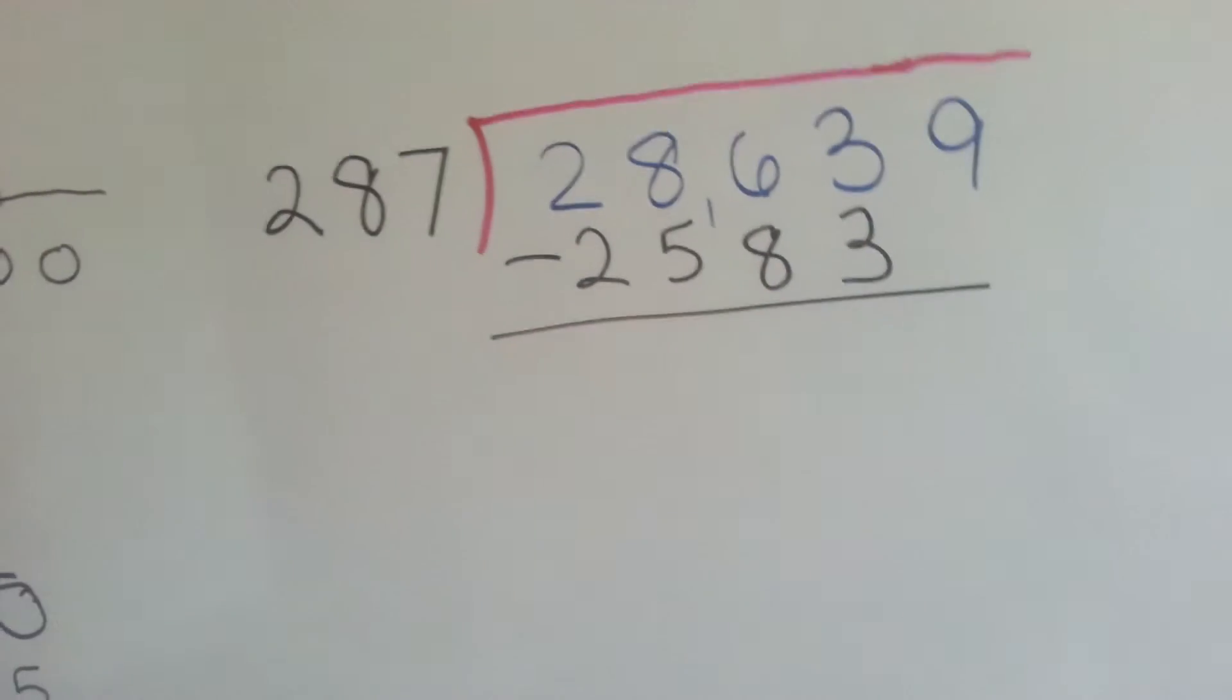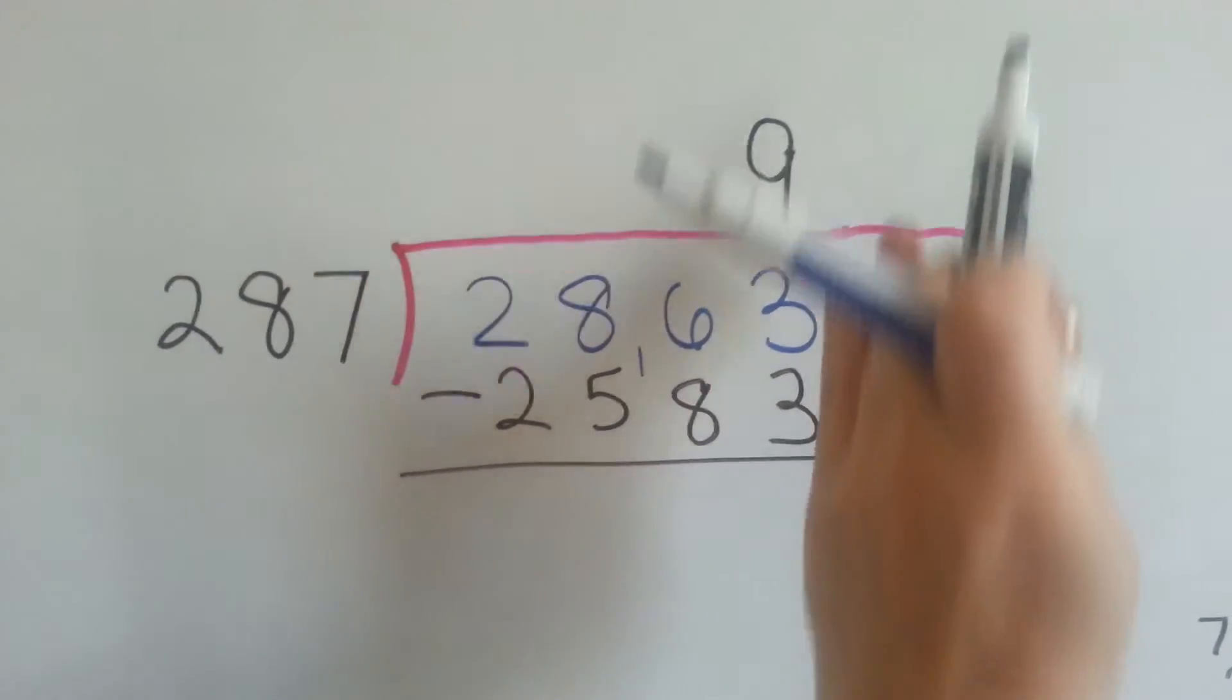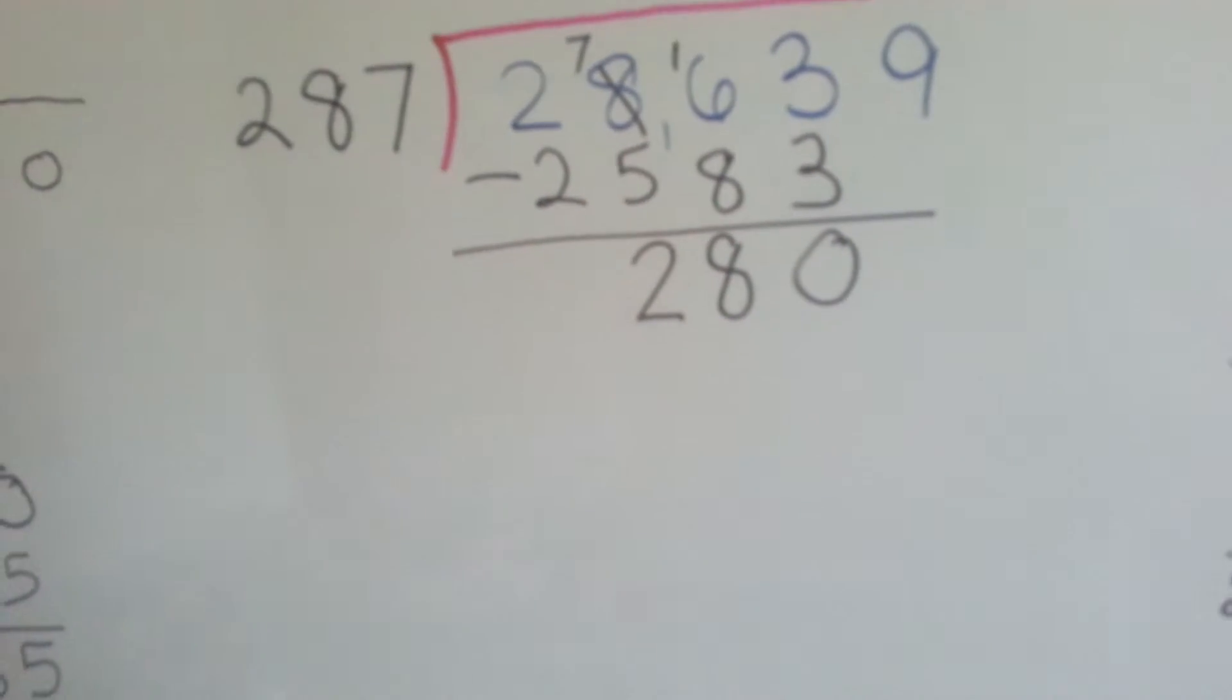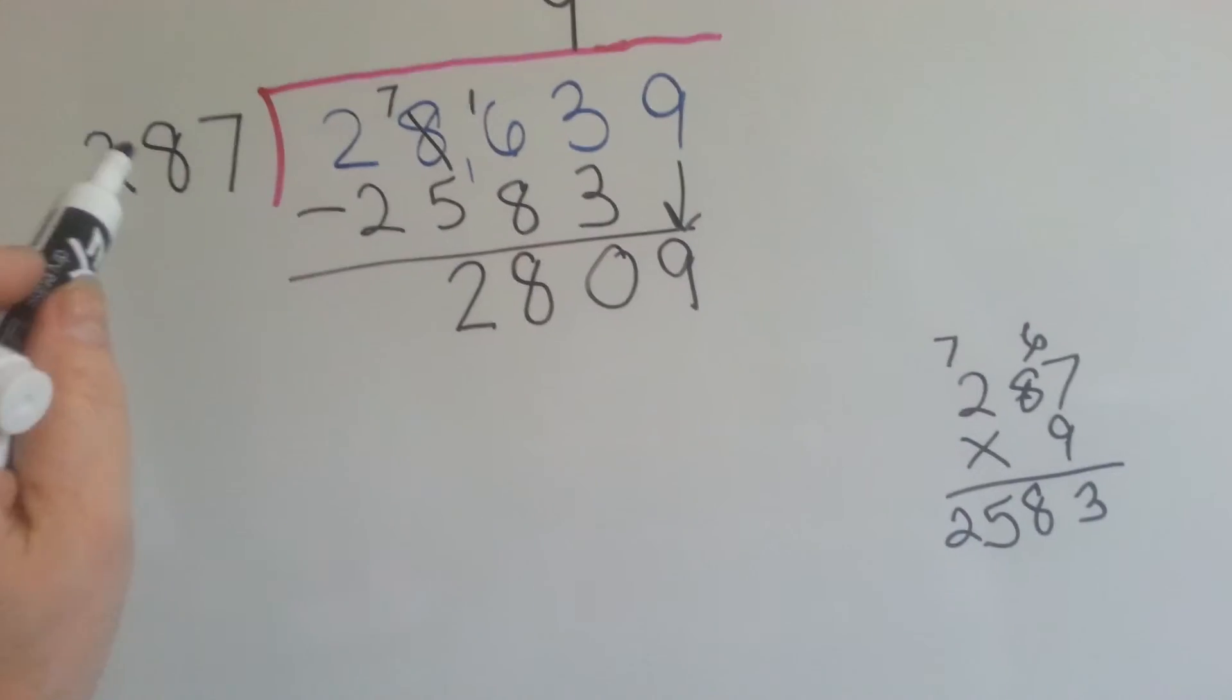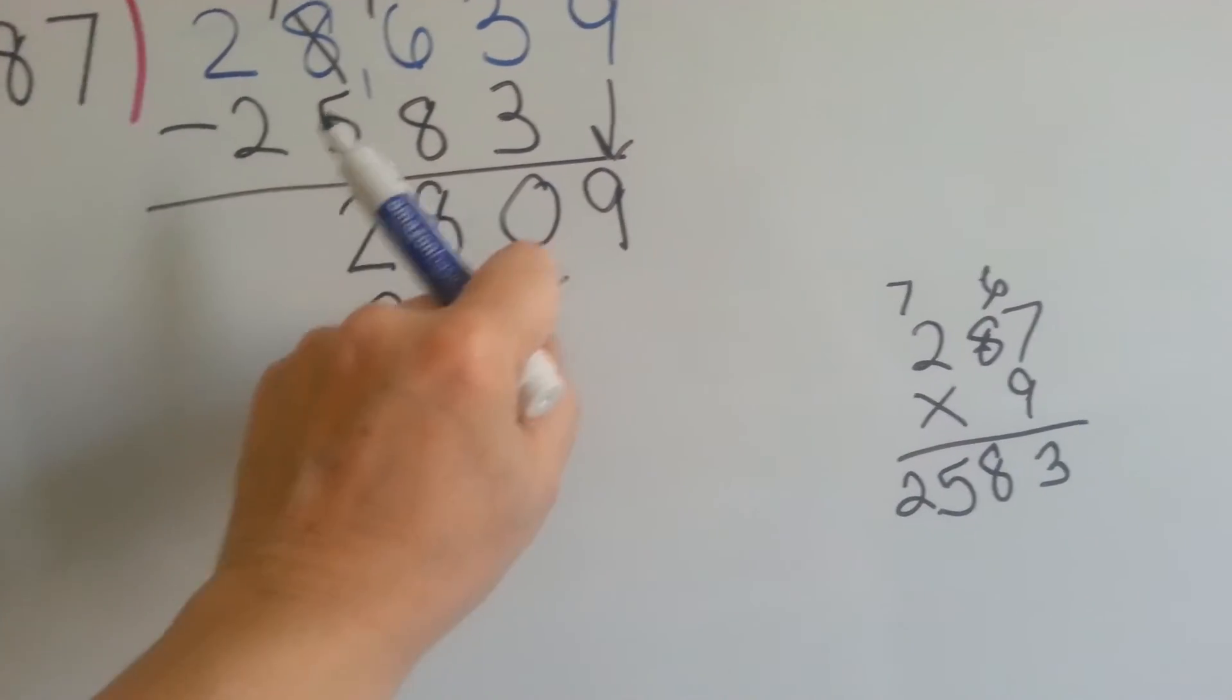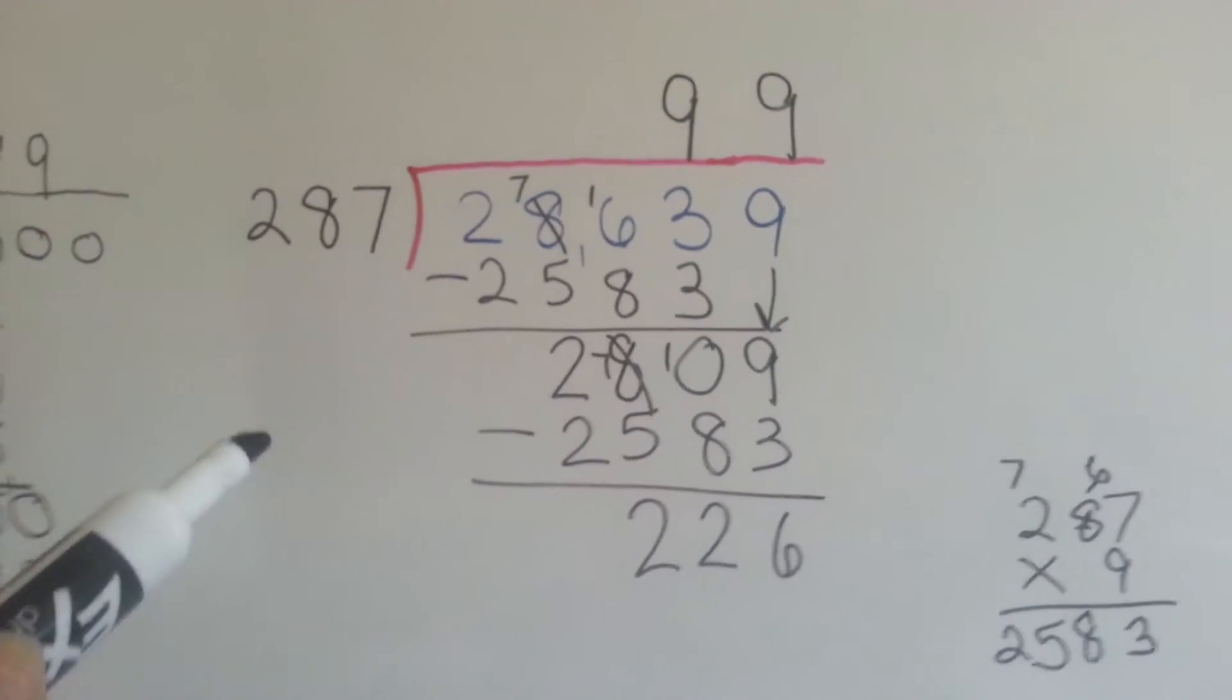That would be 25.83. That would be our subtraction. That would be a very big first one, wouldn't it? And the 9 would go up above here because we didn't put it into the 2 or the 28 or the 286. We put it into the 2863. So, it goes above the number that shows what we put it into. That would be 0. We'd have to borrow for that one. The 9 would drop down. It would be the 9's turn. And then, how many times can it fit into 2809? I'm going to have to go with 9 again. And we can see that that would be 25.83. We do our subtraction.